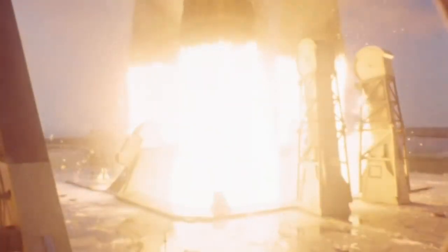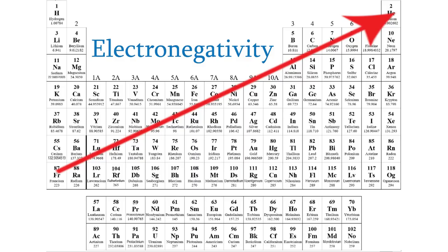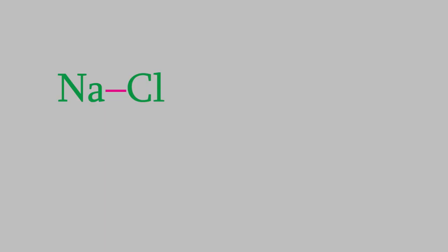As you might expect, some chemical bonds are stronger than others, and it turns out we can make some pretty good predictions about what kinds of bonds are stronger than others. For example, you learned a few videos ago that if the difference between the electronegativities of two elements is large, as in sodium chloride, the bond between them is an ionic bond.